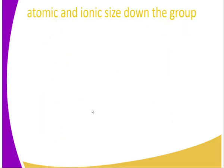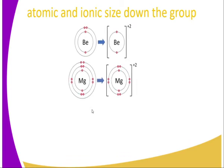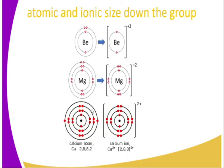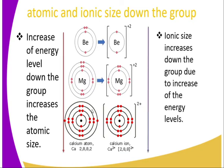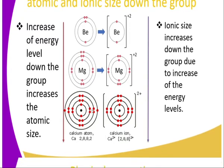What about down the group? Starting with beryllium, magnesium, and calcium — down the group, there is an increase of energy levels, and hence an increase in atomic size. On the other hand, ionic size also increases down the group due to the increase of energy levels. So both atomic size and ionic size increase down the group.